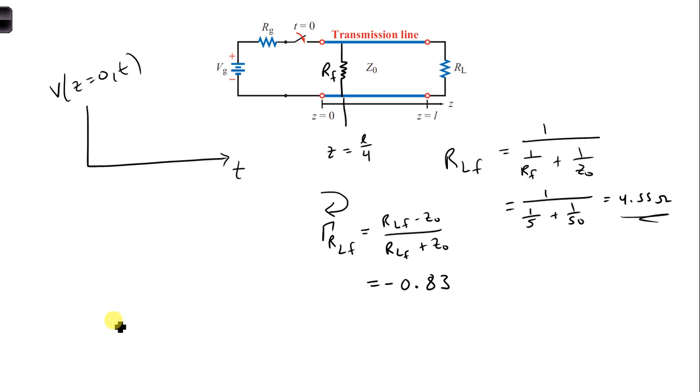So at this point, we can calculate. We already know V1 plus is 6 volts. V1 minus, and I'm going to put a comma F here because it's not a reflection from the load, it's a reflection from the fault location. We're going to use the reflection coefficient Rlf for the voltage, it's multiplied by V1 plus, which is incident on that fault location. Plug in our numbers, I get minus 4.98 volts.